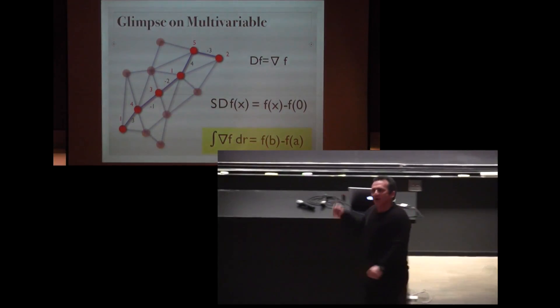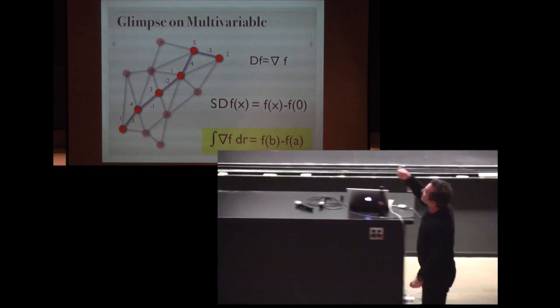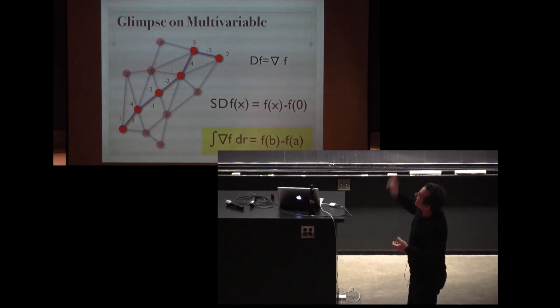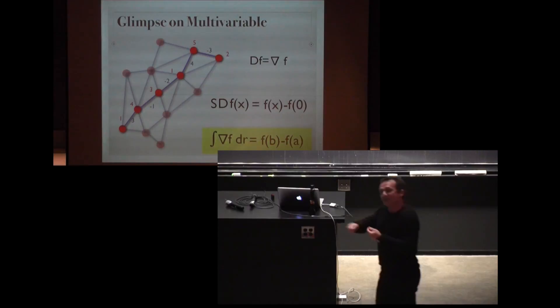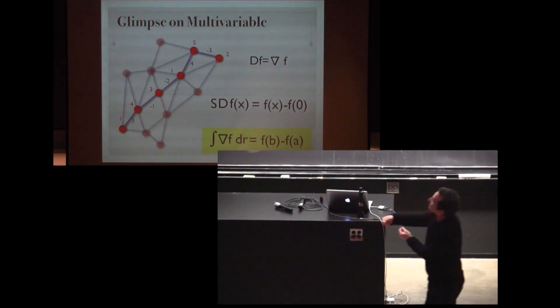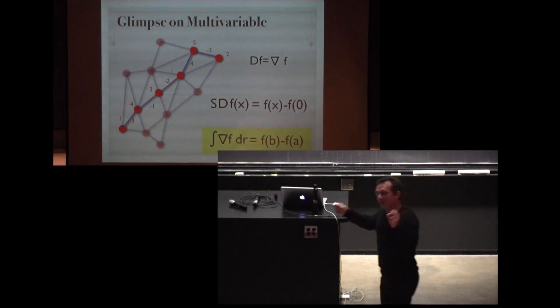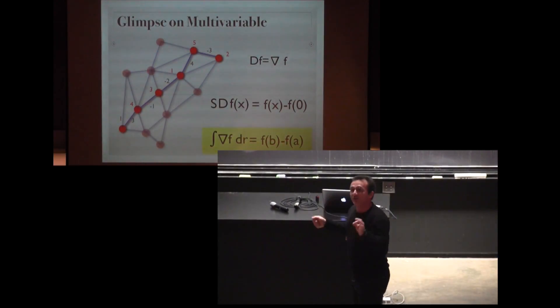Multivariable calculus. A scalar function is a function on the vertices of a graph. The vector field is a function on the edges of a graph. The gradient is the difference between the function values. And if we add up the gradient along the curve we just have the boundary terms which survive. That's the fundamental theorem of line integral.